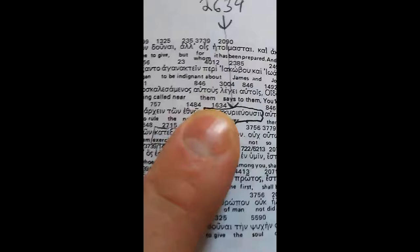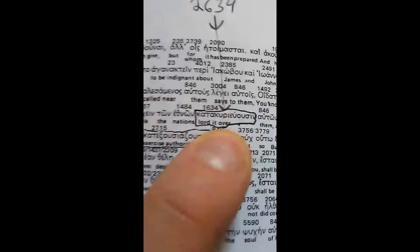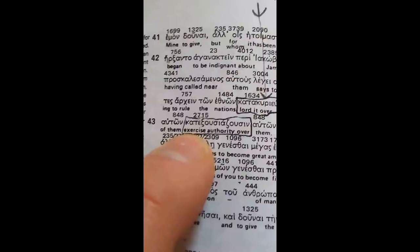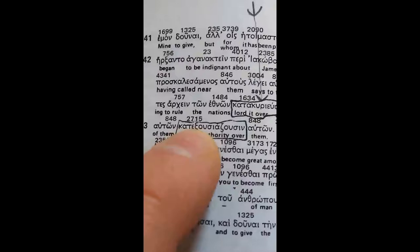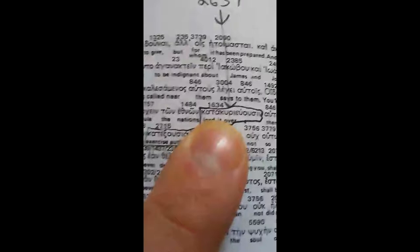And then right here we have, and that word is lord it over. So lord over it. And then right here, exercise authority is, or exercise authority over is katexousiazosin. And this one is katexousiaosin.